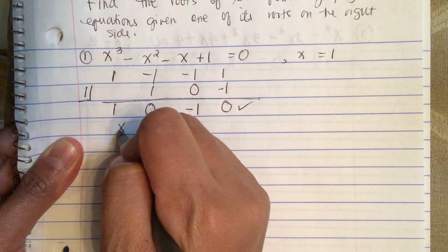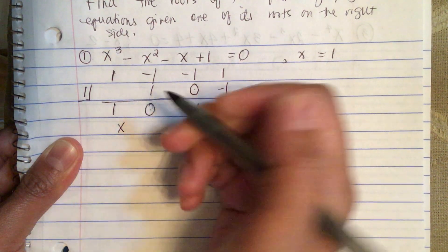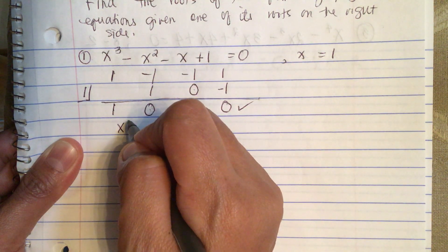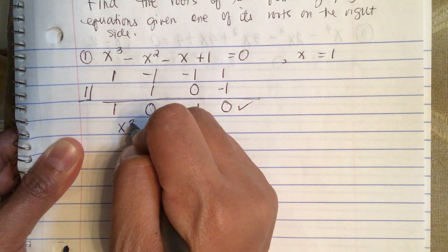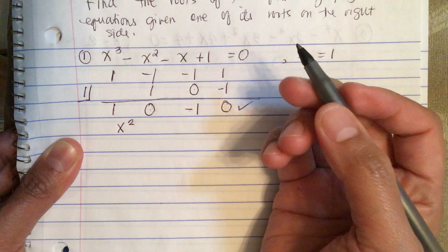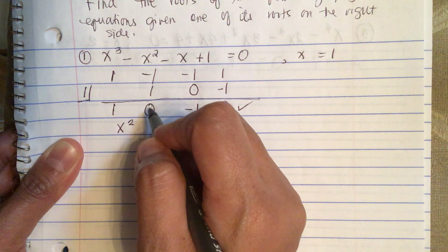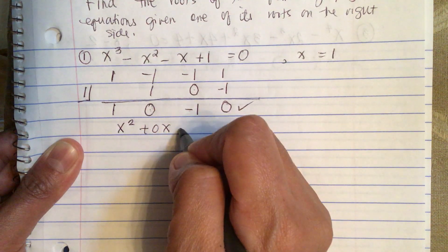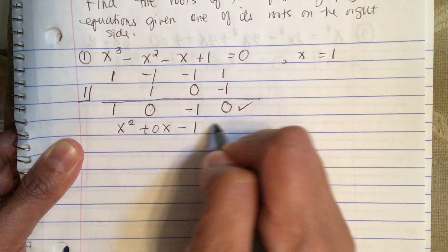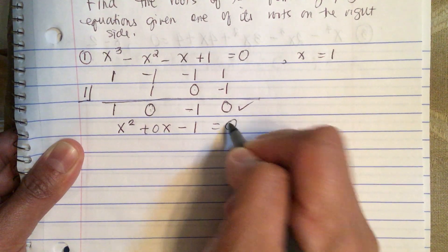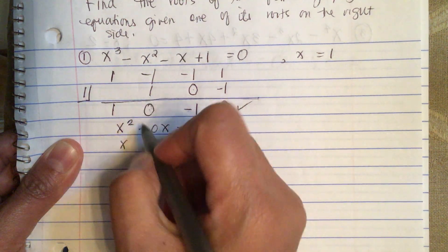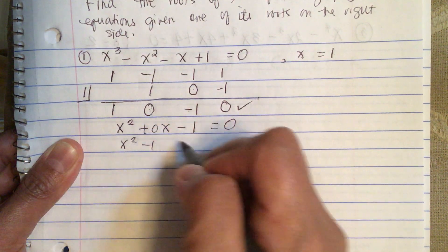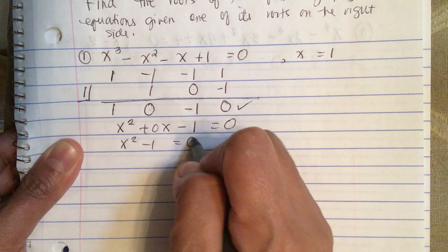I did this because it will simplify the problem to a second degree polynomial. It becomes x squared plus 0x minus 1 equals 0, or simply x squared minus 1 equals 0.